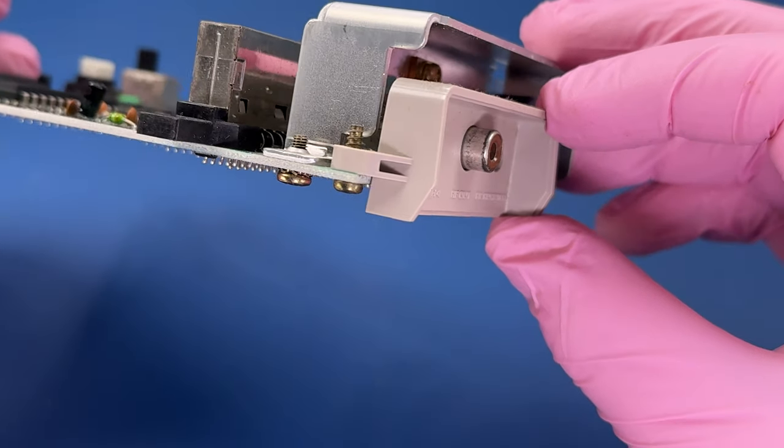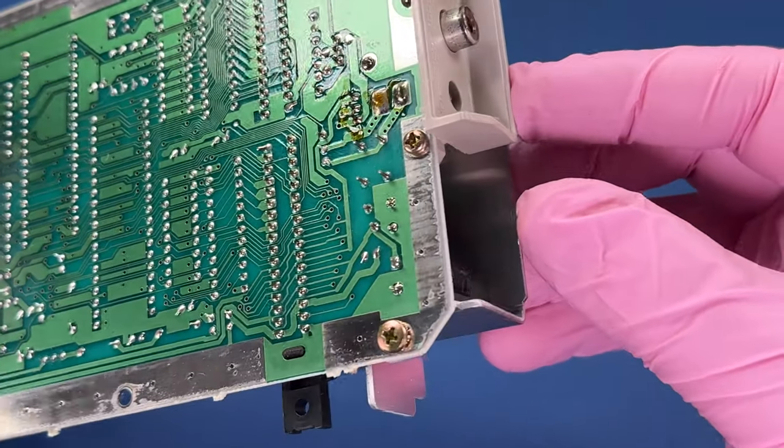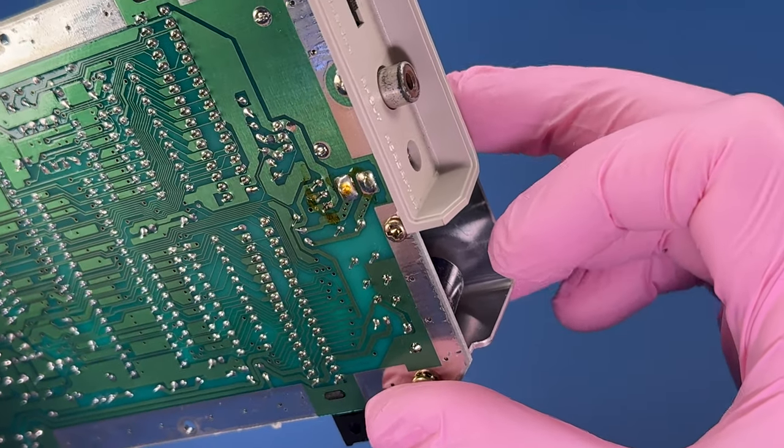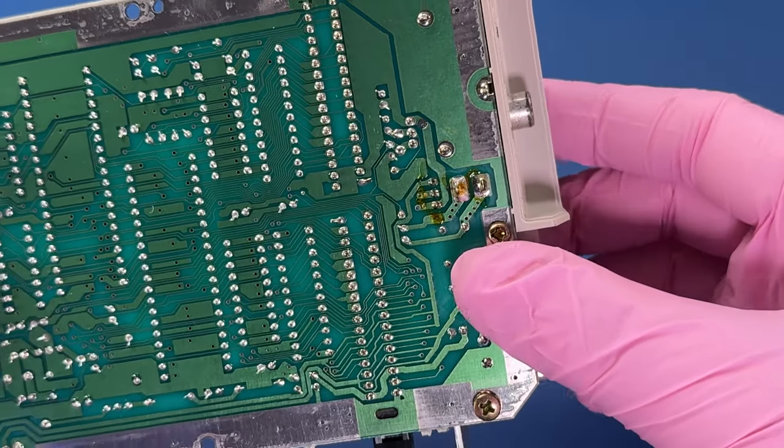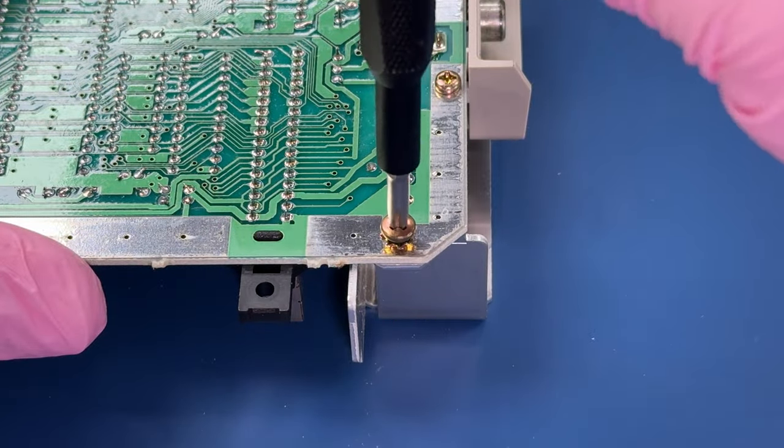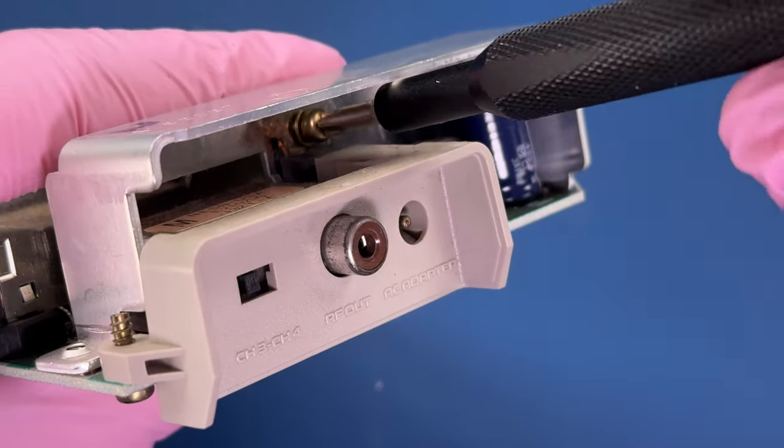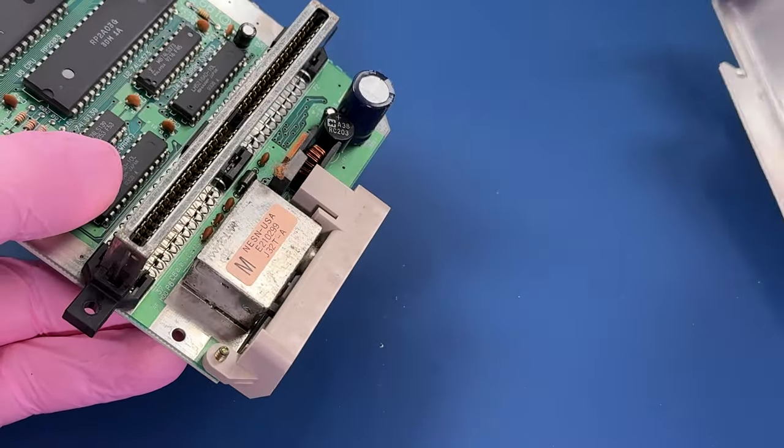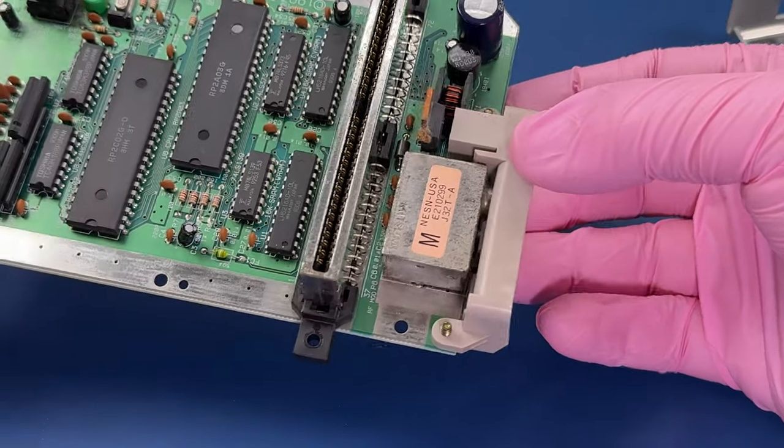One thing I'm not going to disassemble is this port on the back. I would need to desolder this in order to remove it, and for the level of clean I'm doing and considering that it's working, it just isn't worth it. I will go ahead and take this bracket off. And we're pretty much ready to clean.